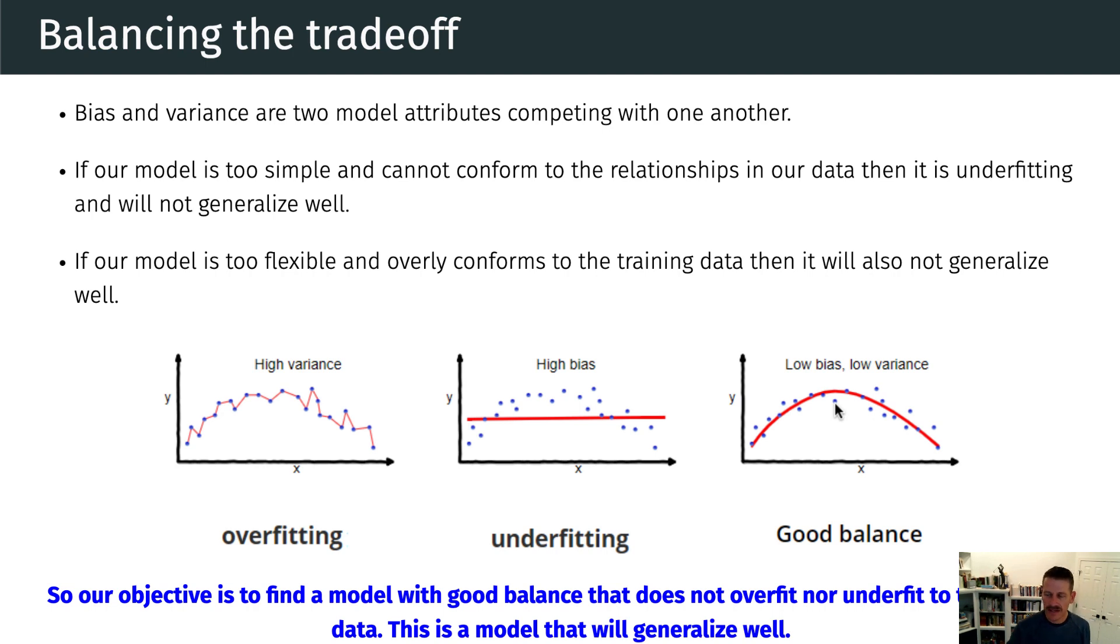And this is a model that is flexible enough to conform to the relationship or the pattern of the underlying data. But we've also constrained the variability so that it's not chasing individual data points. So here we have achieved that biased variance tradeoff where we have a flexible enough model, but it's not overly flexible where it chases individual data points. And this is the kind of model that's going to generalize well to unseen data.